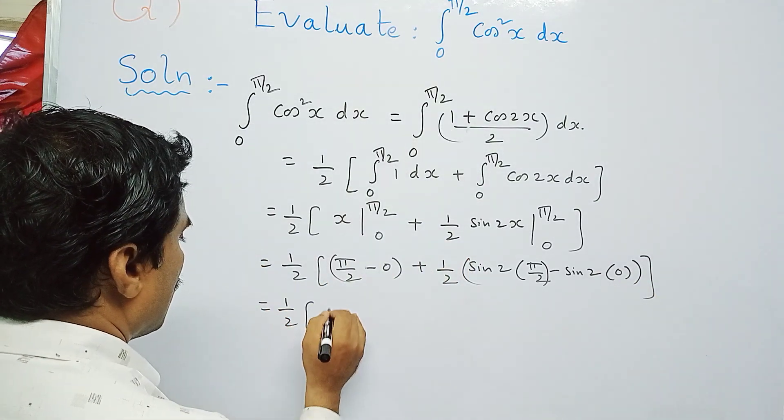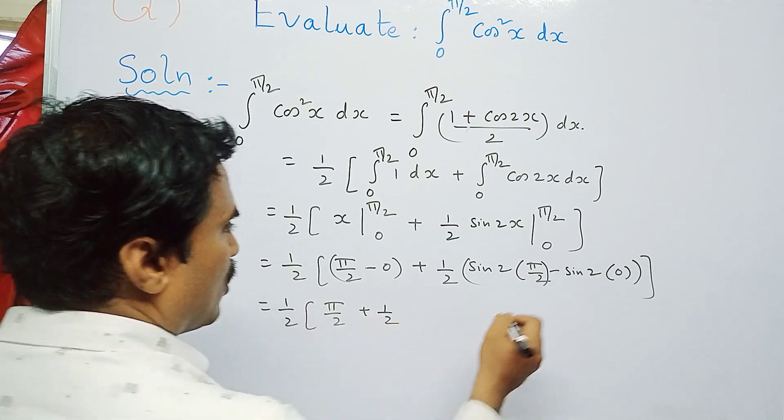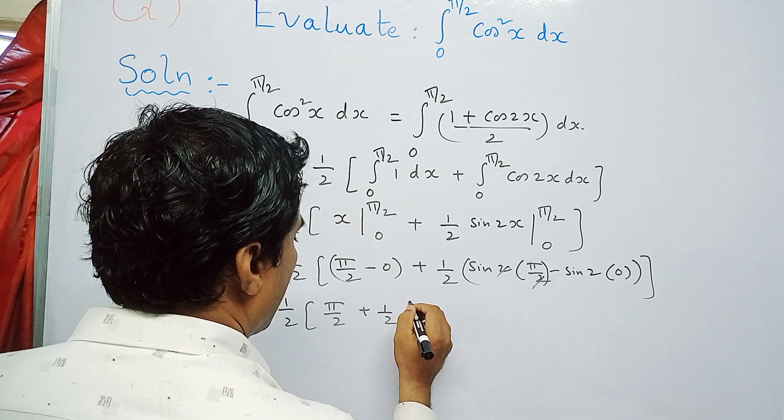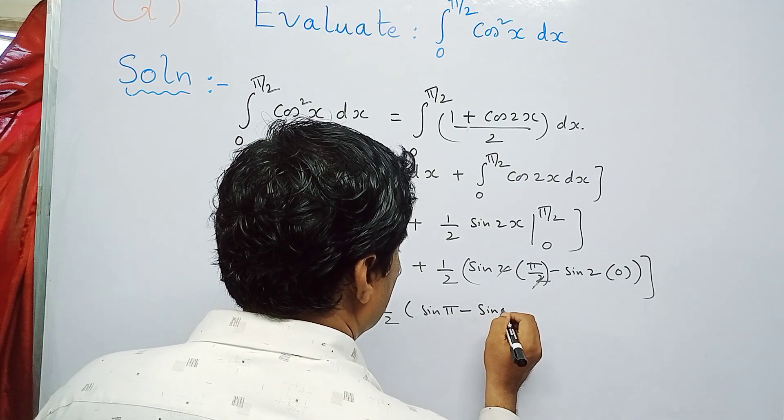So you can write this as 1/2 times π/2, plus 1/2 times now you can cancel 2 and 2 here. So 1/2 times sin π minus 2 times 0 is 0, so sin 0.